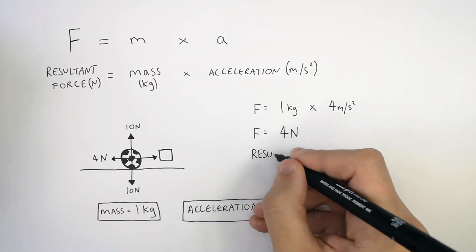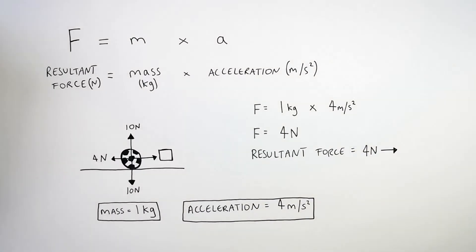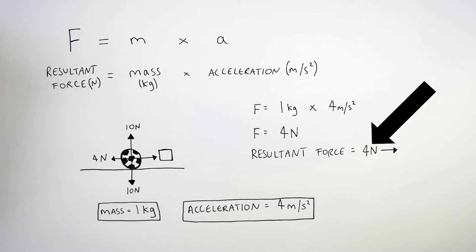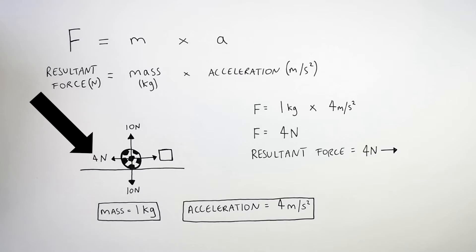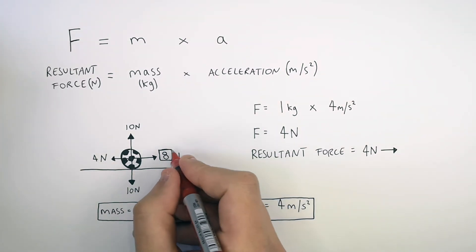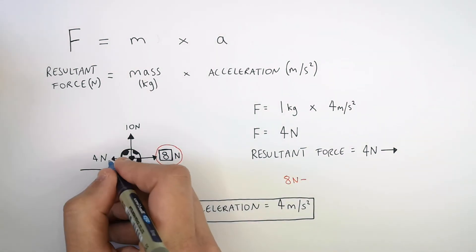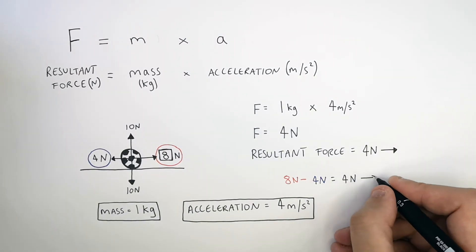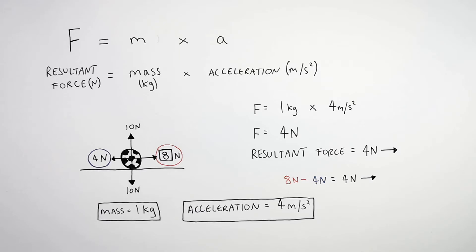The resultant force is 4 newtons. To work out the total force applied to the ball, we add the 4 newton resultant force to the drag force acting in the opposite direction: 4 newtons plus 4 newtons gives a forward force of 8 newtons. We can verify this by subtracting the 4 newton drag from 8 newtons, which gives a resultant force of 4 newtons forwards — consistent with what F equals MA gave us.